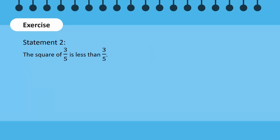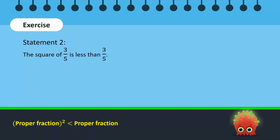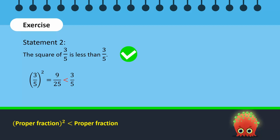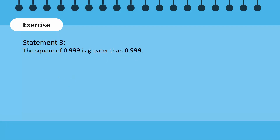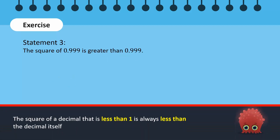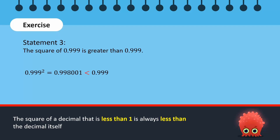The numerator 3 is less than the denominator 5. Therefore, this is a proper fraction. As we've learnt in this video, the square of a proper fraction is always less than the proper fraction itself. The square of a decimal that is less than 1 is always less than the decimal itself. Since 0.999 is less than 1, its square will be less than the decimal itself. So this statement is incorrect.